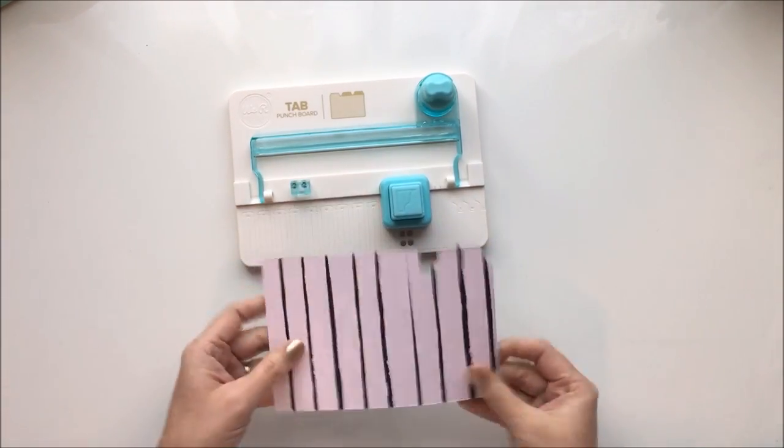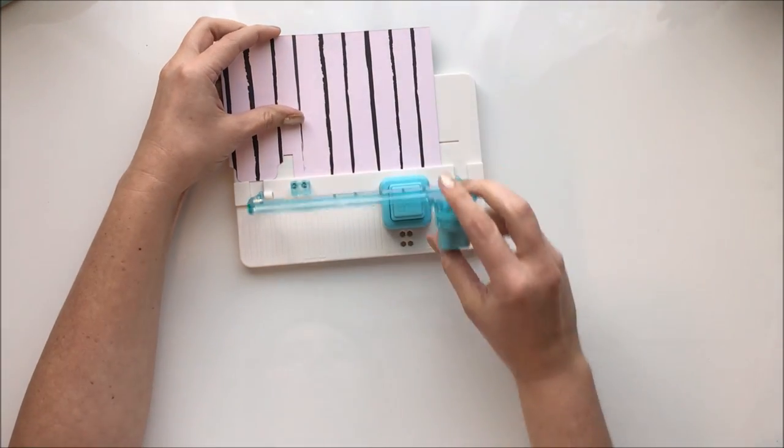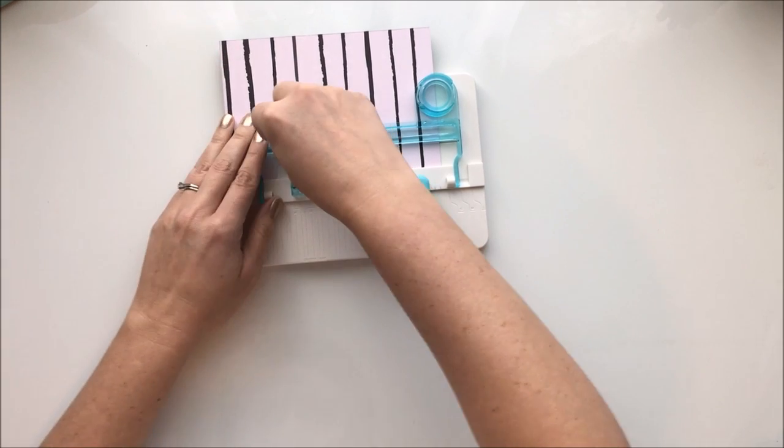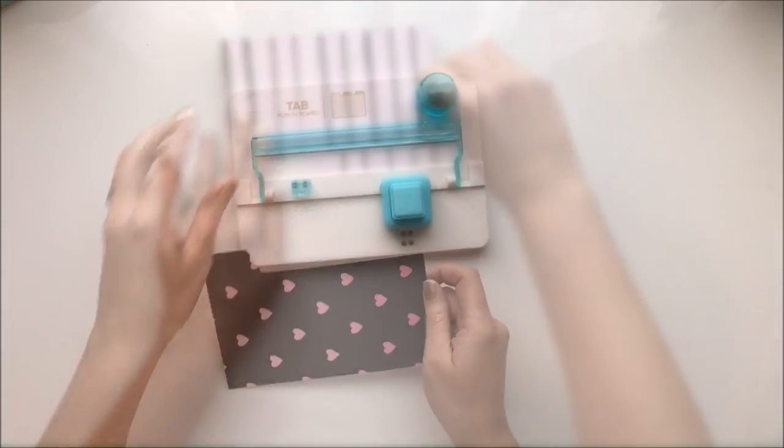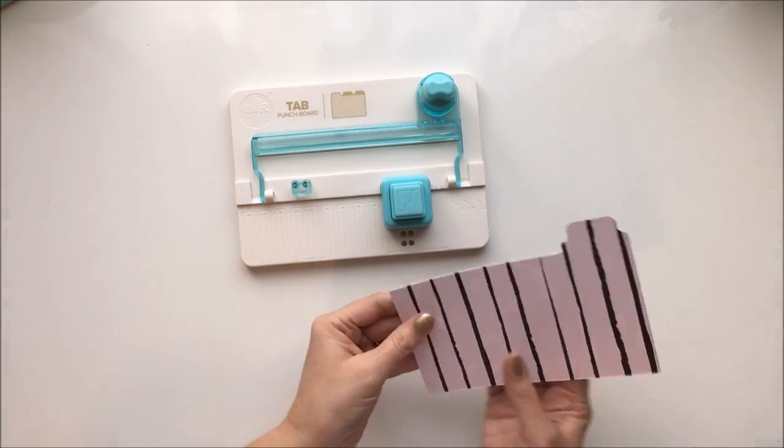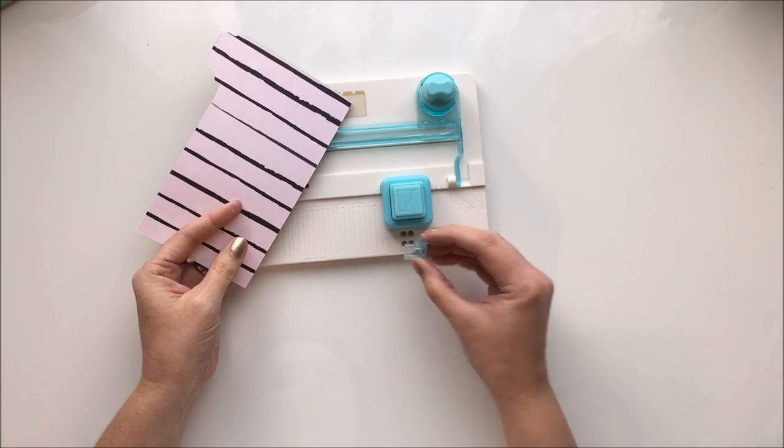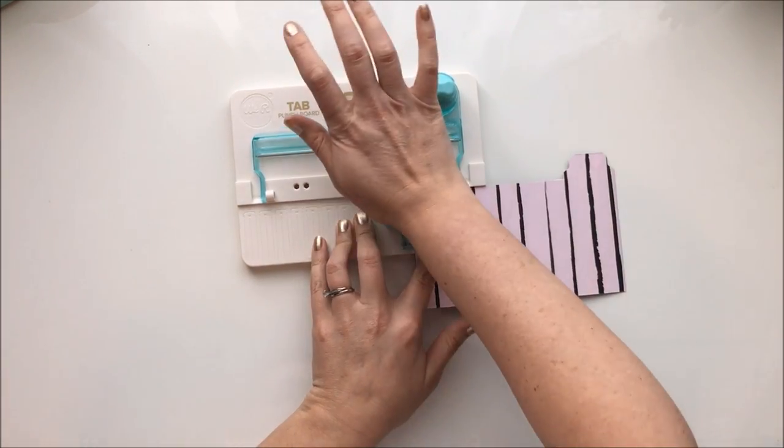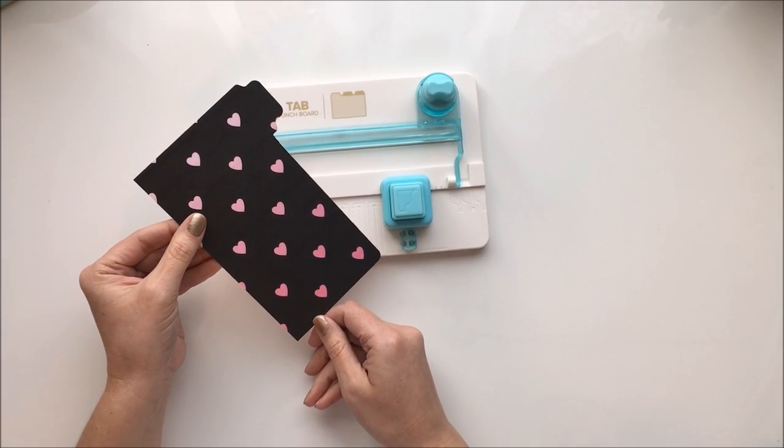Then you flip it over up here on top, you put down the bar, pull out the blade, and you trim the excess off. Easy as that, you now have a divider. Now to make it really nice and finished, you're going to put your tab alignment bar back down in the other slots and use the corner rounder punch to get a nice round edge there. And there you have it, there's your top.